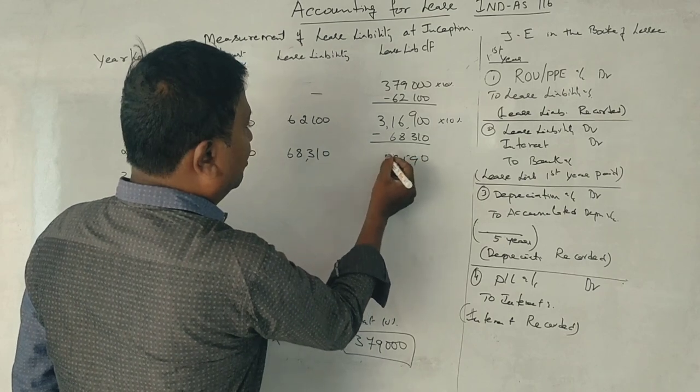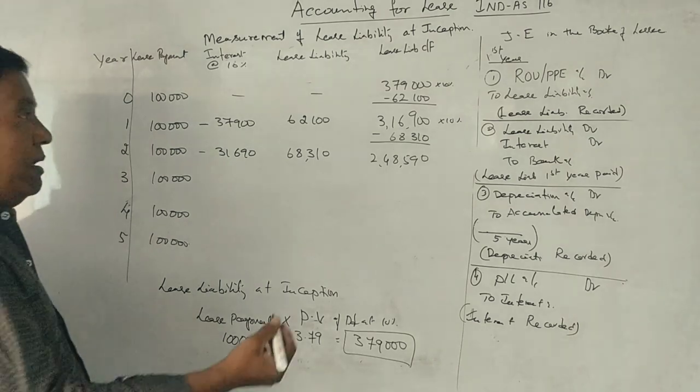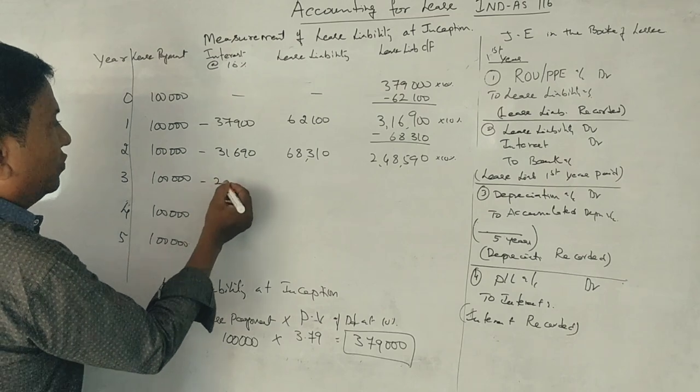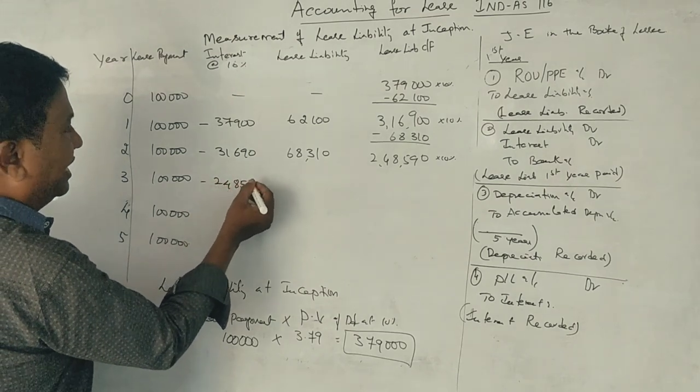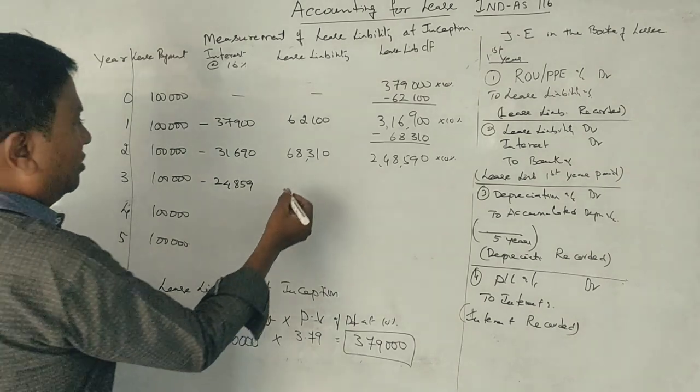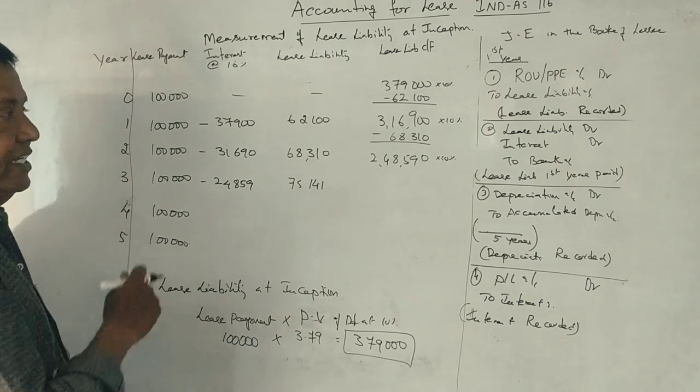2,48,590 rupees, this amount 10% per year, interest is 24,859 rupees. 75,141 rupees, this amount is 75,141 rupees, lease liability third year.